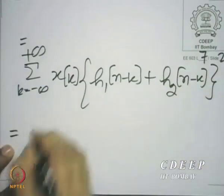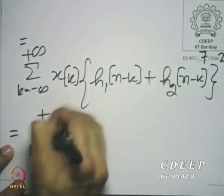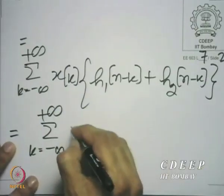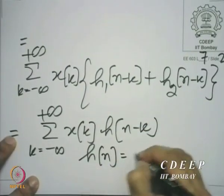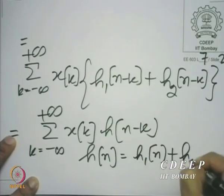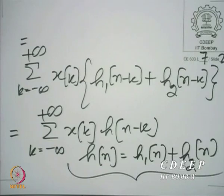This does not require any great knowledge — it is just a simple distributivity property of multiplication, where h(n) is equal to h1(n) plus h2(n). So when we have two LSI systems in parallel, there is an equivalent LSI system whose impulse response is the sum of the impulse responses of the individual LSI systems. Simple enough.